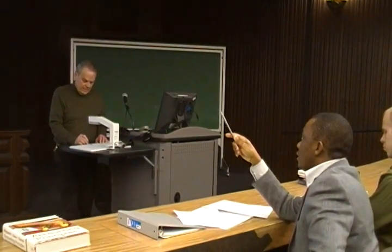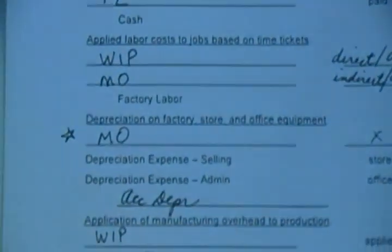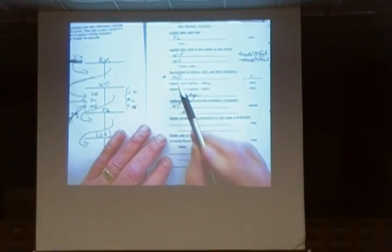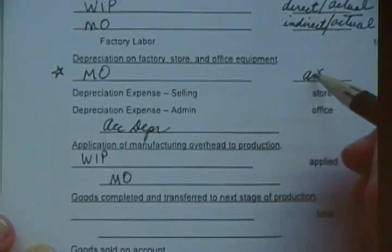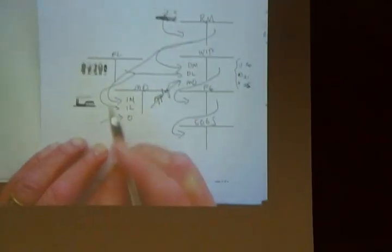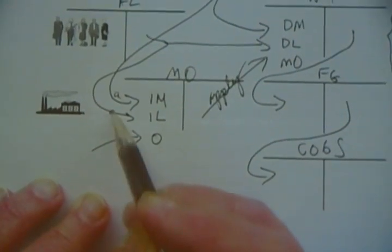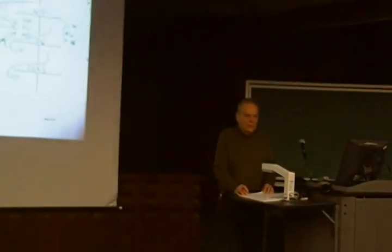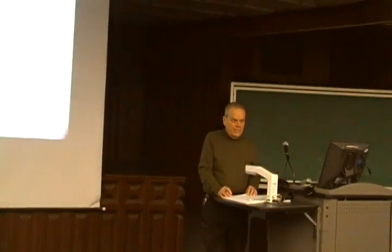You've got to be curious, you've got to want to know, you've got to be paying attention. Are debits to manufacturing overhead actual or applied? Debits to manufacturing overhead are actual. The only one that's applied is the credit. It was a good question.